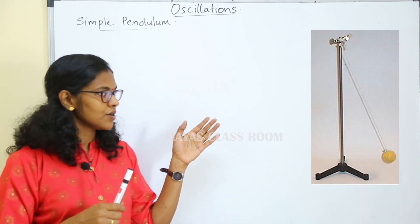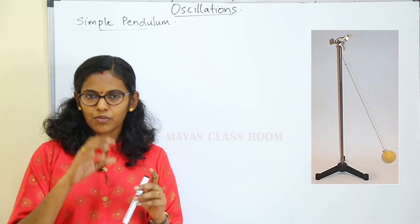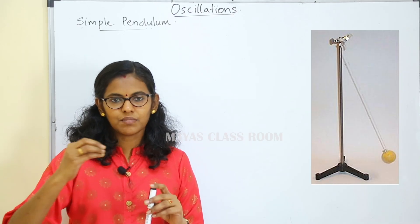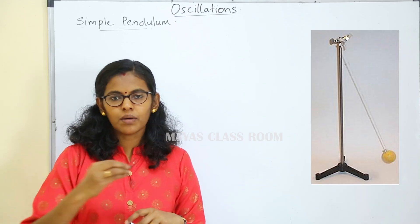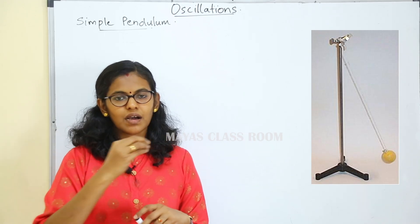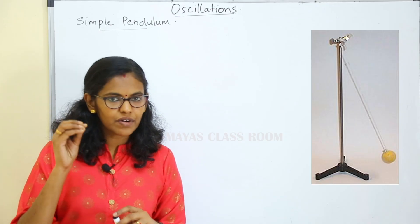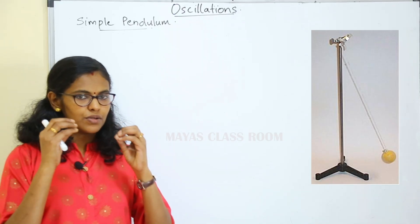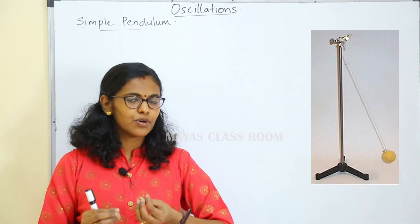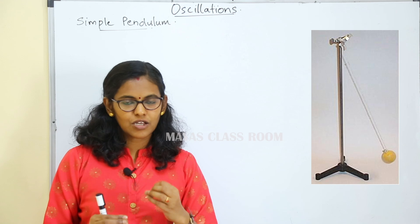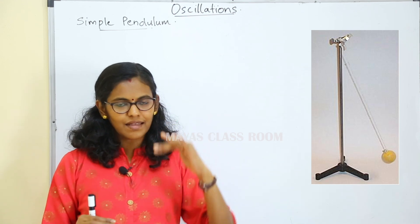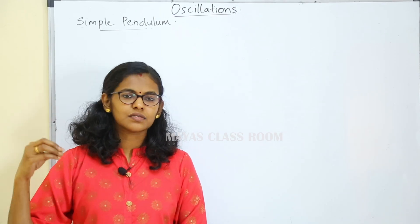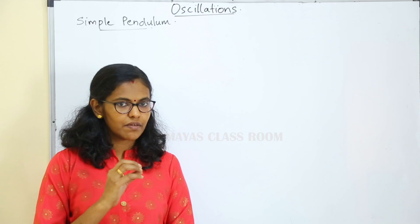The second example is a simple pendulum. A simple pendulum has a small bob attached to a string, and the string is attached to a fixed point. When the bob is displaced to one side and released, it executes simple harmonic motion. We will find the time period of this oscillation.